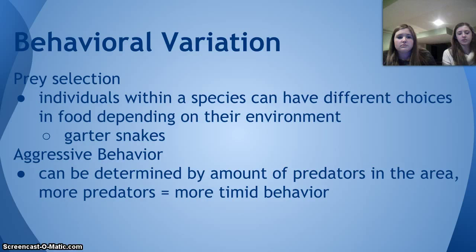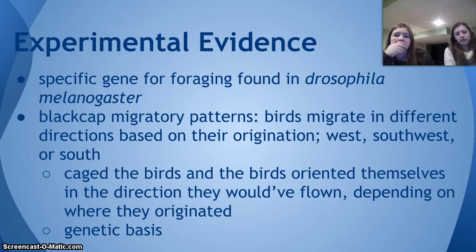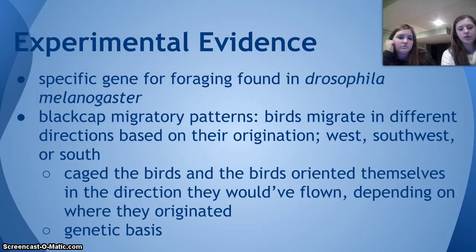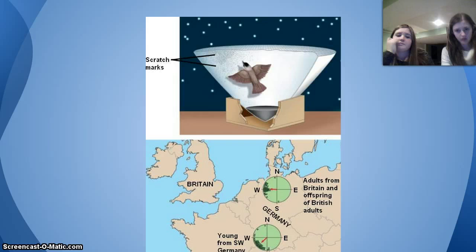For experimental evidence, a specific gene for foraging is found in Drosophila melanogaster, a type of fruit fly, and it is made specifically to help the animal forage. There are also blackcap migratory patterns: birds migrate in different directions based on their origin — west-southwest or south. In caged birds, they fly in the direction they would have if they were free to migrate, as shown in the top picture where the bird leaves scratch marks in its departure direction.